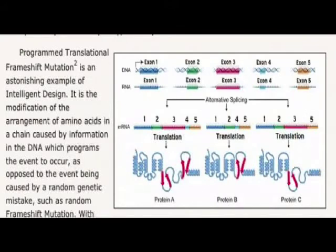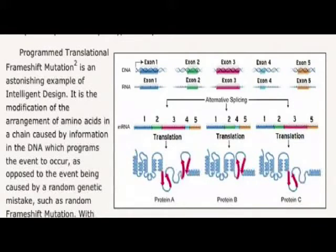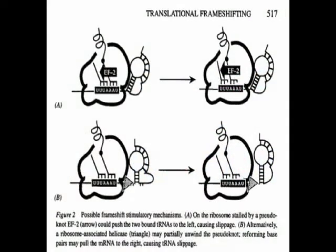Any biologist watching this will get a good laugh out of nephilimfree's illustration of a translational frameshift. Alternate splicing is basically just different ways of cutting RNA. Not only is this a pre-translational process which has nothing to do with translational frameshifting, splicing only occurs in eukaryotes — not prokaryotes like bacteria.